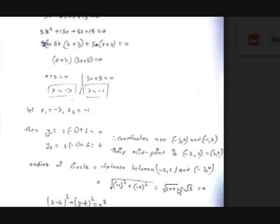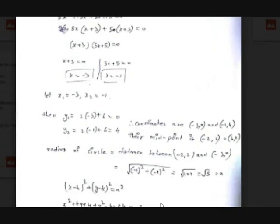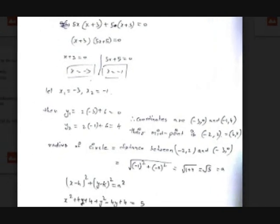Now we understand why we used h, k, and a — because the equation of a circle with center and radius given is (x minus h)² plus (y minus k)² equals a². Substituting, we get (x plus 2)² plus (y minus 2)² equals 5, which simplifies to x² plus 4x plus 4 plus y² minus 4y plus 4 equals 5. Simplifying gives us the equation of the circle. Now let's see a new topic.